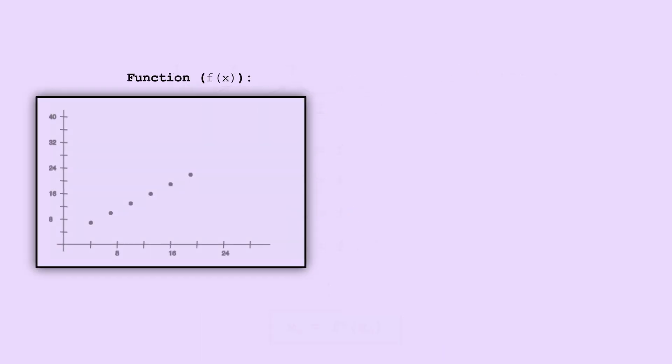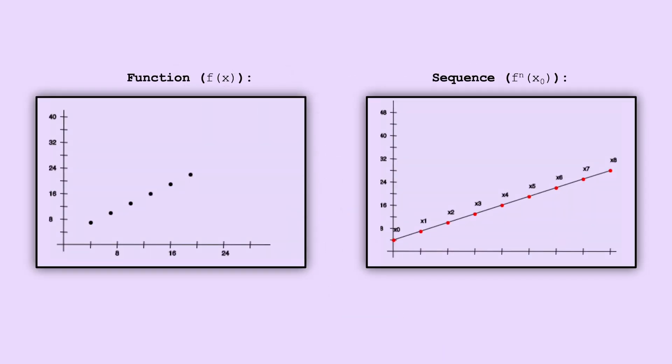Then here would be our function f, and here would be the sequence generated by our initial x value. However, we don't need to start a sequence at some fixed point. We could choose any value for x0 to start it at. And in this way, we can define a continuous function which gives an infinite number of possible sequences.